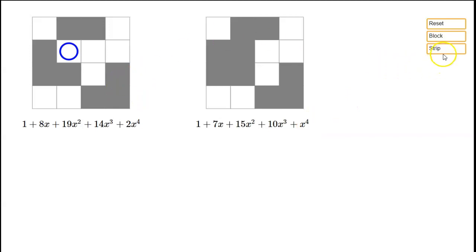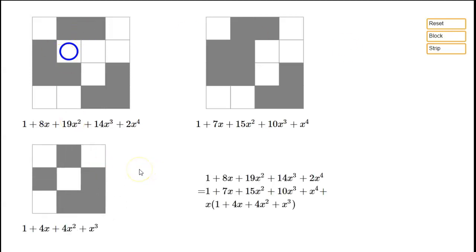And the other thing that we do is stripping. So stripping means we take this board, and we just cross out the row and the column that contained the marked square, and then we just squash everything back together to make it a square. So now, blocking gave us a board of the same size as we started with, but stripping gives us a smaller board.